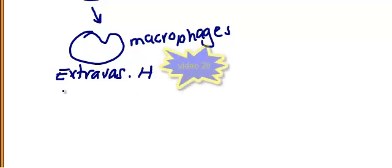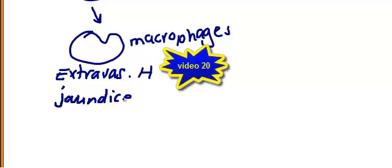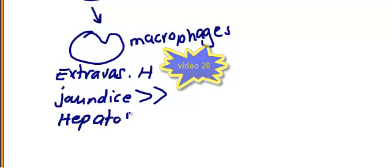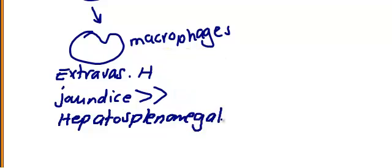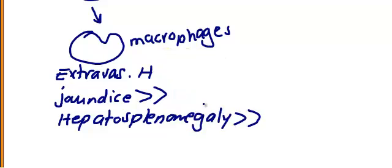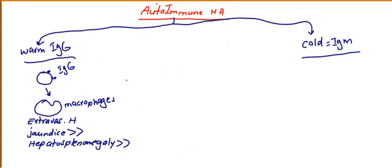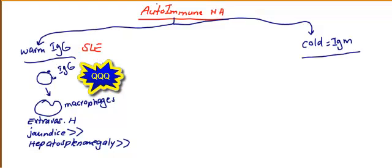Features of extravascular hemolysis: jaundice will be more prominent than in intravascular hemolysis, and hepatosplenomegaly, also more than intravascular, because the macrophages ingest the abnormal or coated red blood cells. Examples include SLE and chronic lymphocytic leukemia.